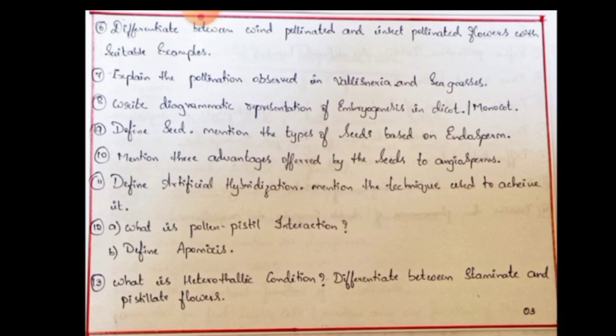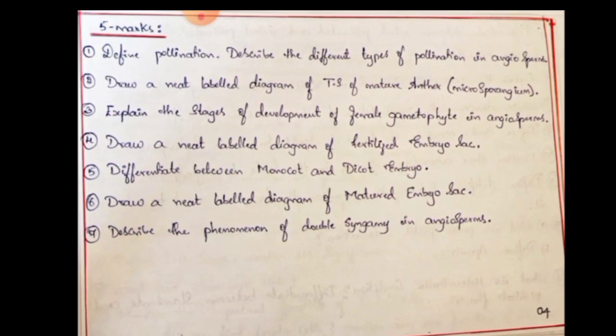Next: What is pollen-pistil interaction? Define apomixis — this is a split-type question: two marks for one part, one mark for the other. Next: What is the heterothallic condition? Differentiate between staminate and pistillate flowers. Heterothallic condition relates to cross-pollination; cross-pollination versus self-pollination is a methodology question.